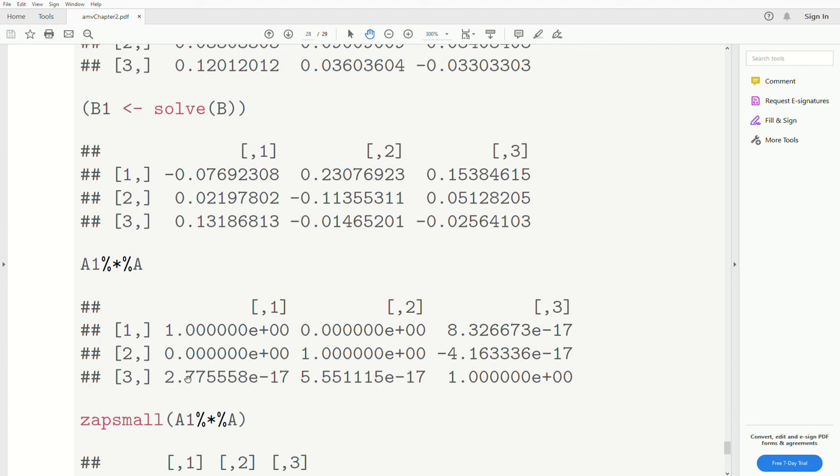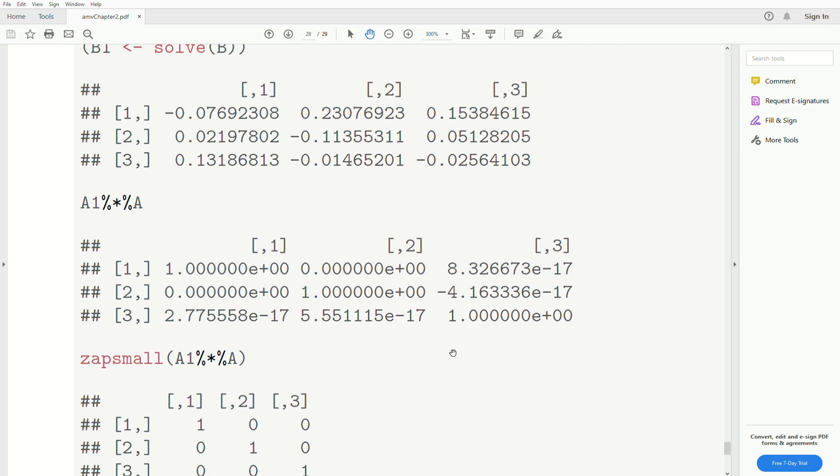And this is 0. And this is 0. But look at this. This is 2.7 E to the minus 17. So that means there's 17 or 16 zeros in front of this. Same here, here. Those are incredibly close to 0. So this is essentially the identity matrix. And that's one of the downsides of rounding in computers.